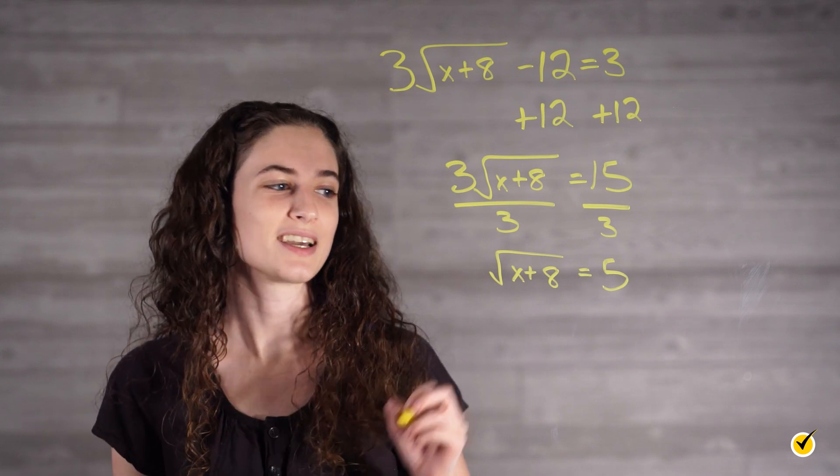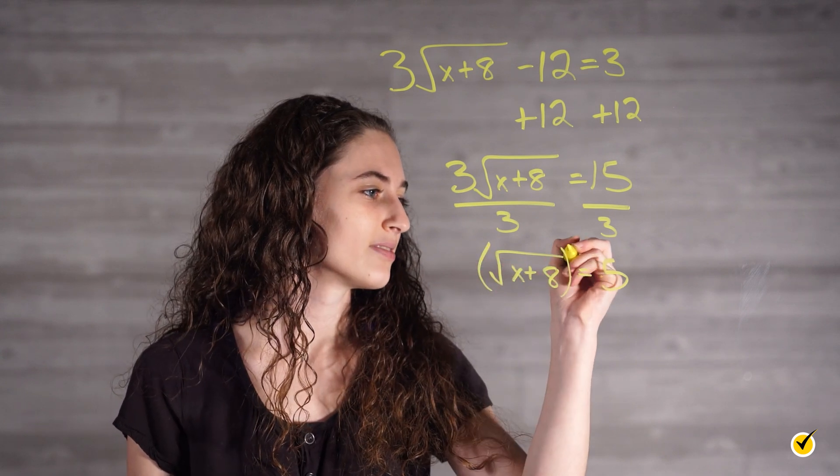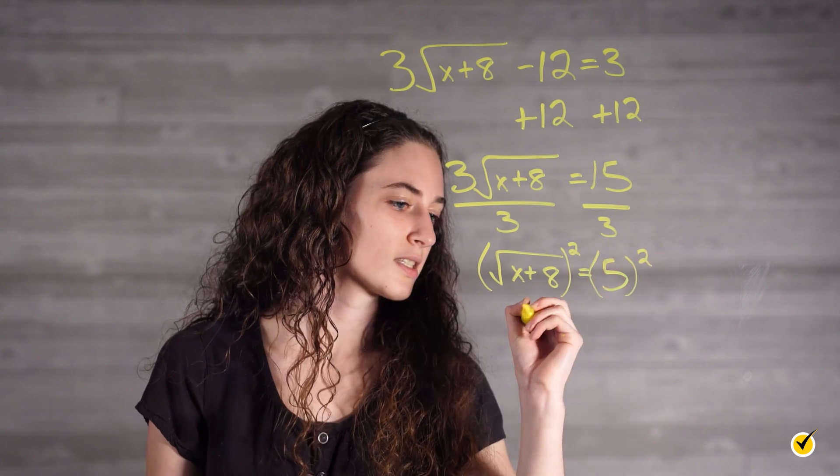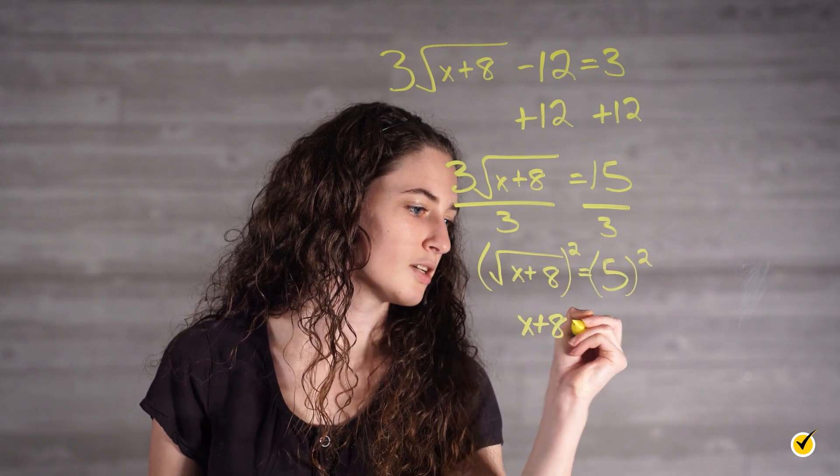Now we are going to square both sides. This gives us x plus 8 is equal to 25.